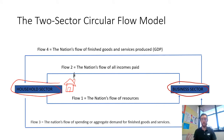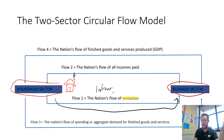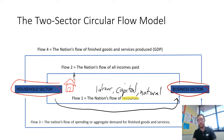Businesses produce goods and services but to do so they need resources — and who provides those resources? Households provide those resources to the business sector. Students would straight away say labour, which is 100% correct, but households might not only provide labour; they could also provide natural or capital resources. You might own a factory and rent it out to businesses, or you might have land they can use, providing a natural resource.